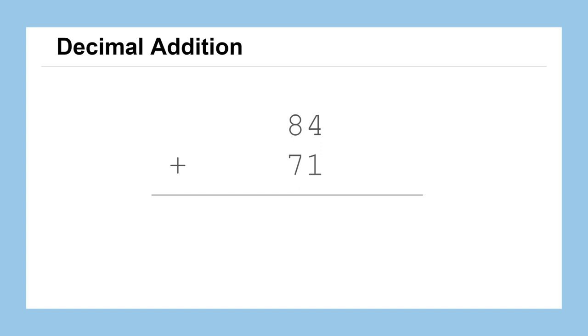If we were to add these numbers in their decimal representations, we'd start by looking at the furthest right position in each number, the 1's digit. Here we can see 4 plus 1, we can add those vertically to have a result of 5, also in the 1's position of our result.